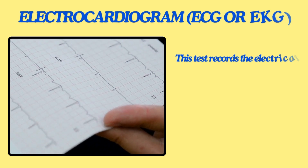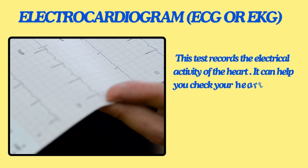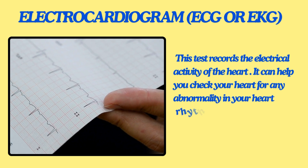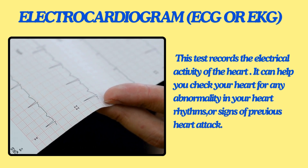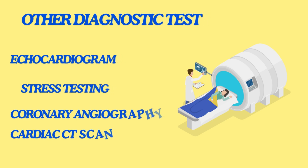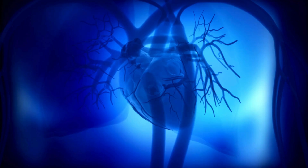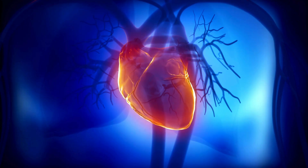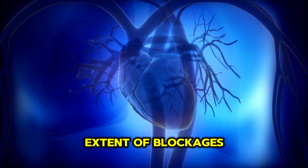An electrocardiogram, or EKG, is a common test used to record the electrical activity of your heart. It can help detect any abnormalities in your heart rhythm or signs of a previous heart attack. Other diagnostic tests include echocardiogram, stress test, coronary angiography, and cardiac CT scan. These tests provide detailed images of your heart and coronary arteries, allowing your doctor to assess the extent of blockages.